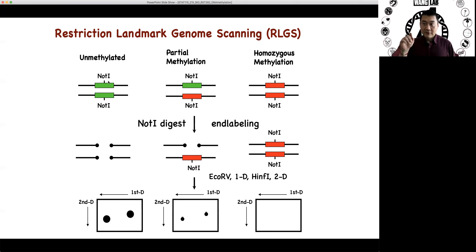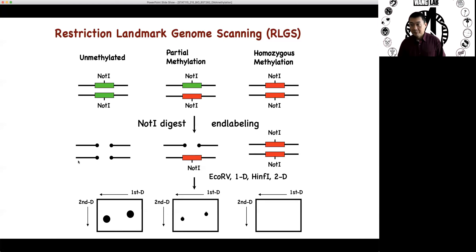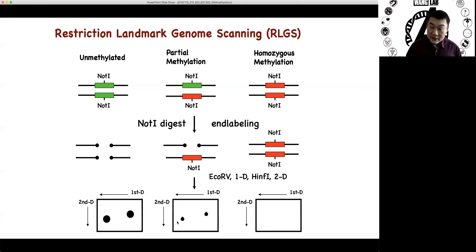For example, Not1 recognizes a motif CCCCGGGG, but it only cuts when the middle CG is unmesulated. When the middle CG is mesulated, it does not cut. So taking advantage of this, if you digest the genome with Not1 and the site is unmesulated, you end up with this cutting. You can label the end of the DNA chromosome, and you can run this DNA on a two-dimensional gel, and you'll be able to see these two dots representing these two fragments. If one allele is unmesulated but the other allele is mesulated, you only cut one allele, the other allele is intact. You can still label this, and you're going to see the same two dots, but smaller, because you only have half of the signal.